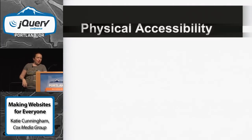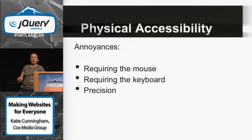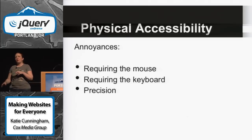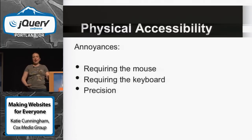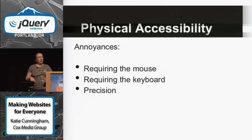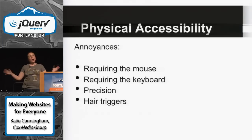To the physical disabled — some of their annoyances: requiring the mouse, requiring the keyboard, and precision. Why both mouse and keyboard? Because some adaptive devices go through the mouse, some through the keyboard. Some people just can't use a mouse and use Tab to get around a website. Also watch out for hair triggers. This group is a bit all over the place, but often you can solve many problems together.